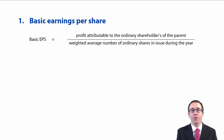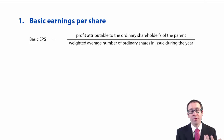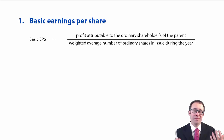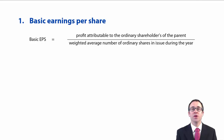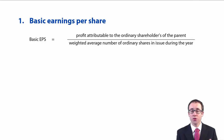To calculate basic earnings per share: the formula is earnings divided by shares. It's not on the formula sheet, so you need to remember it. We need to be careful to use the correct earnings figure and to consider the type of share issue and when those shares were issued during the year.